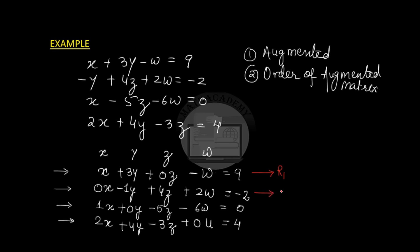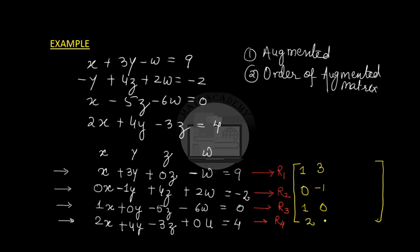Each linear equation corresponds to a row in the augmented matrix. We list the coefficients of x: 1, 0, 1, 2; then y: 3, −1, 0, 4; then z: 0, 4, −5, −3; then w: −1, 2, −6, 0. We place a colon sign and then list all four constants: 9, −2, 0, 4. This is our augmented matrix.